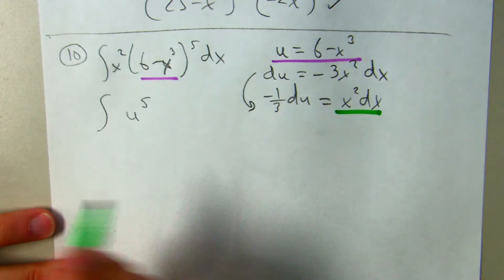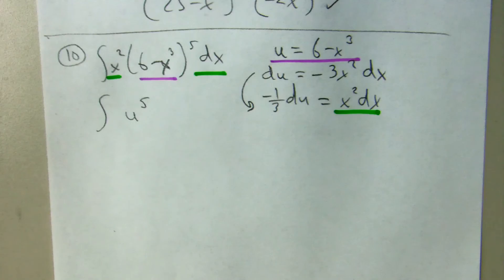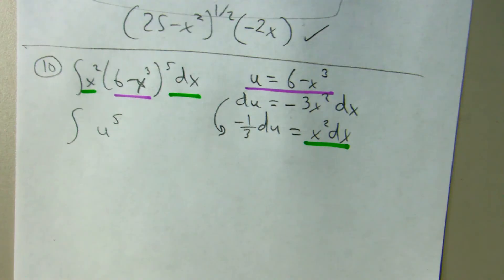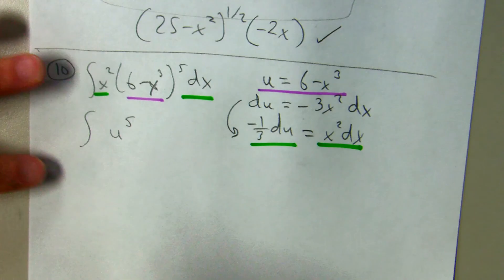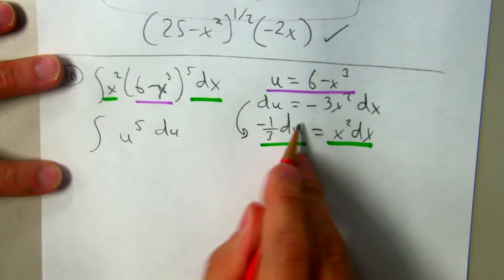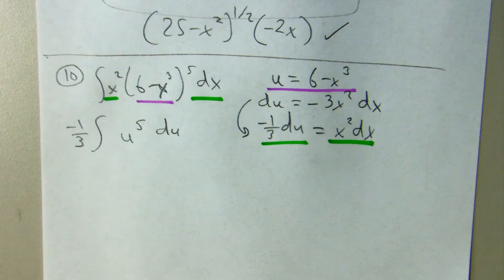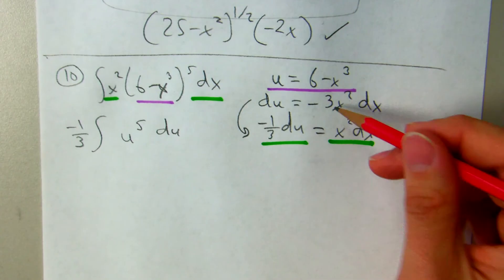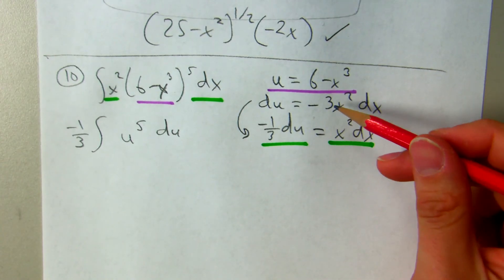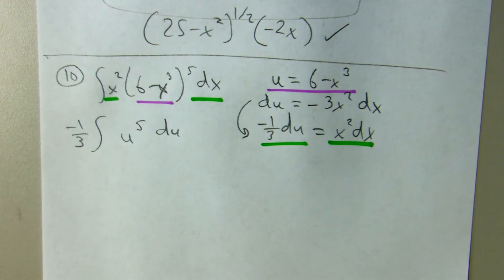Now, x squared dx is this stuff. So I can substitute it with that stuff. A du, but also a negative one third. This had a negative three times too much. So it looks like I multiplied by negative one third.